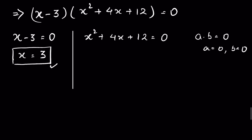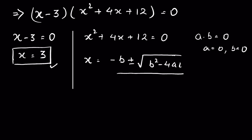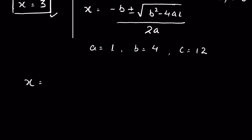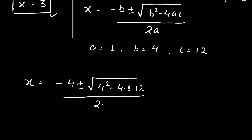To find the roots of x² + 4x + 12 = 0 we use the quadratic formula: x = (-b ± √(b² - 4ac)) / 2a, where a = 1, b = 4, and c = 12. So x = (-4 ± √(16 - 48)) / 2.